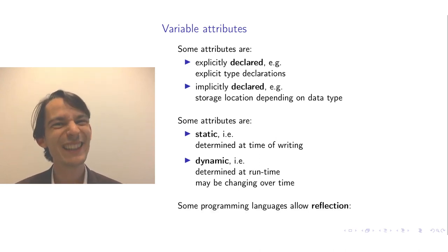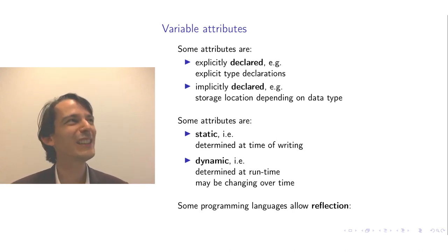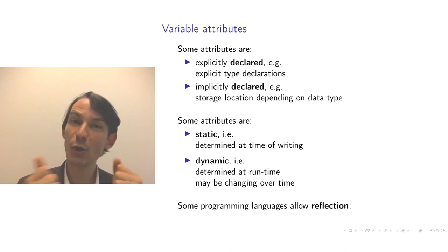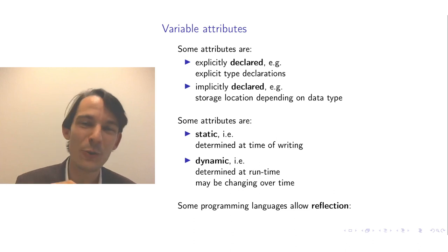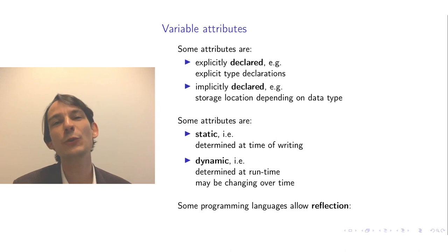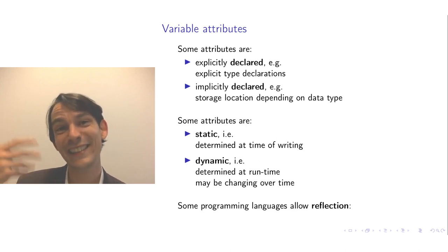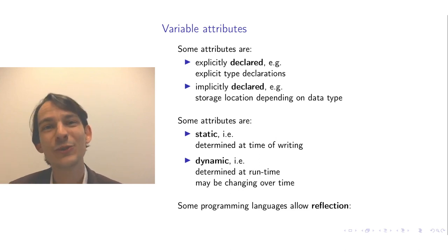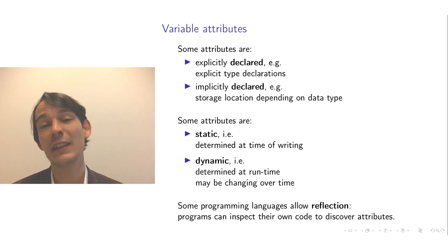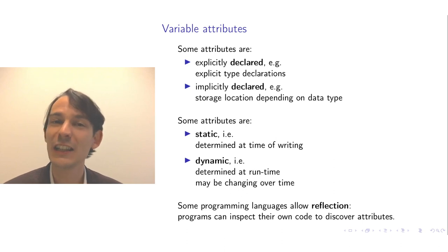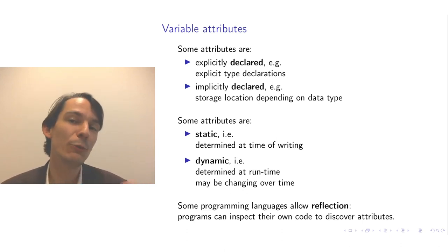Another interesting aspect of some programming languages is reflection — the ability for a program to inspect its own properties while executing. Reflection allows the program to analyze its own text at runtime to discover the attributes of its variables. This is especially useful for dynamic attributes, which are determined at runtime, so it is very helpful if your program can read out that information during execution.